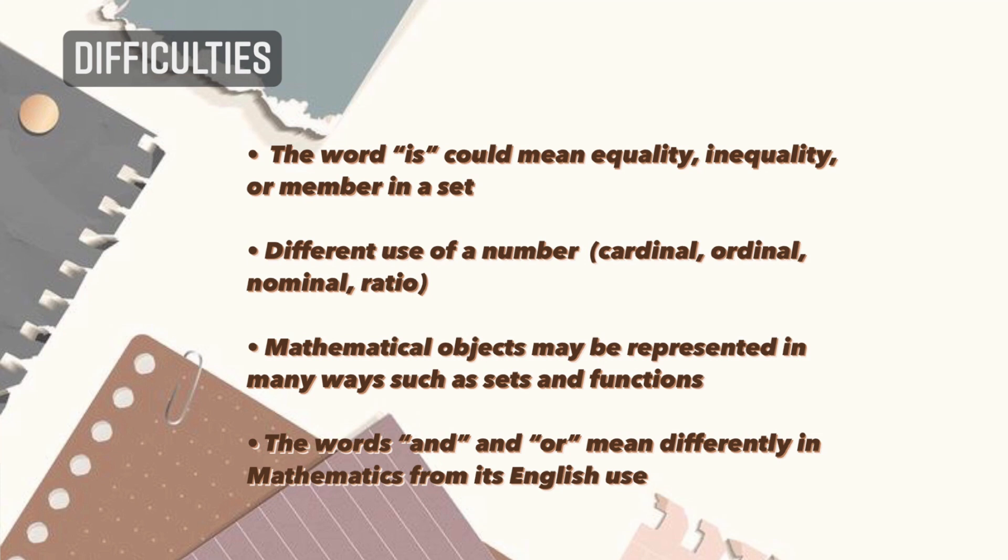Second is the different use of a number, such as cardinal, ordinal, nominal, and ratio. Third is that mathematical objects may be represented in many ways, such as sets and functions.